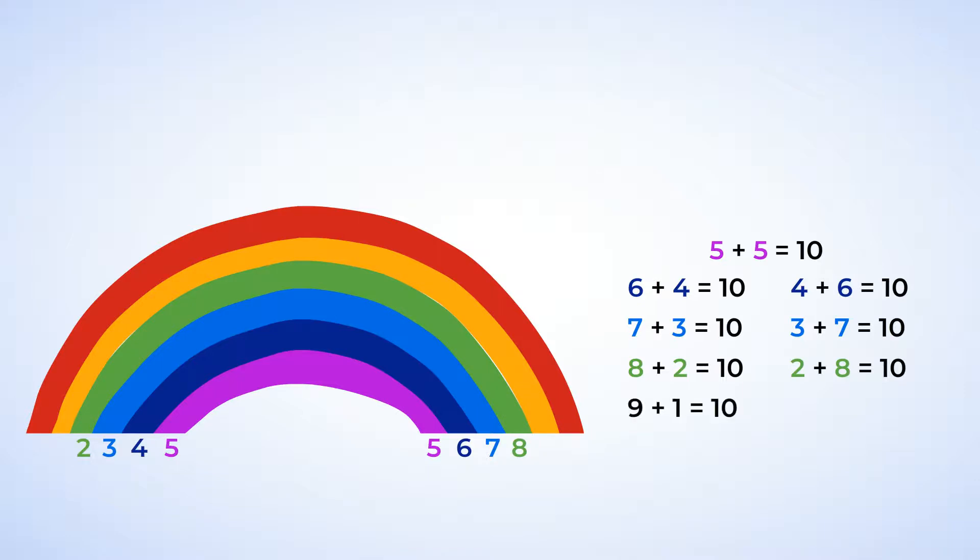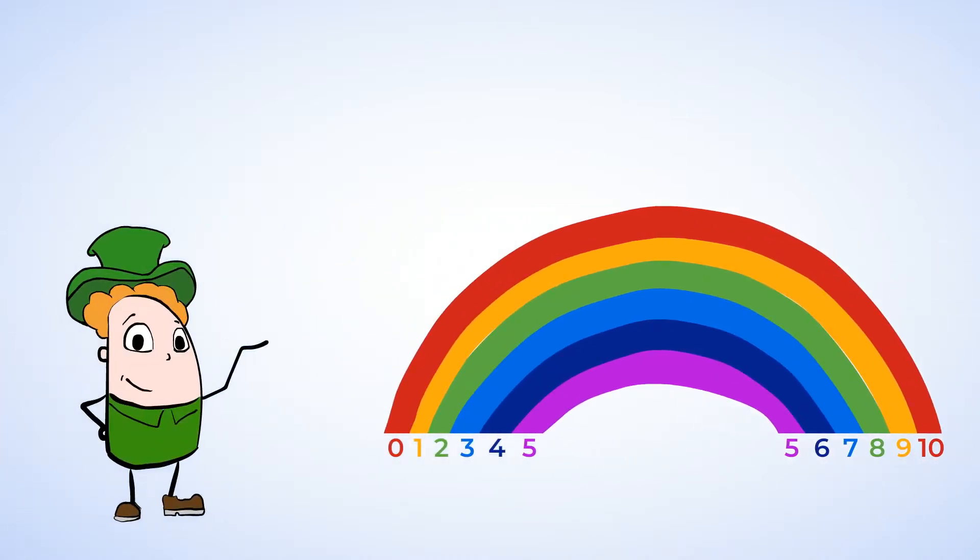And now we have nine and one. And since they make ten, they go up on the rainbow too. Nine and one are ten friends. So one plus nine is ten, and nine plus one is ten. And lastly, we have ten and zero. Ten plus zero equals ten, and zero plus ten equals ten. And so they're gonna go on the last color of our rainbow. Wow, look at all of our friends of ten on the rainbow. If you're unsure of what makes ten, you can always draw this rainbow yourself and find out.